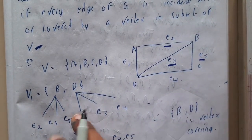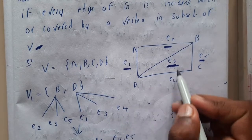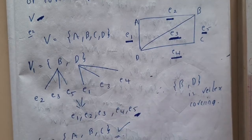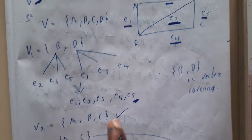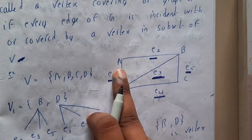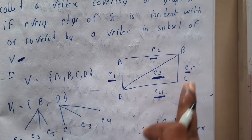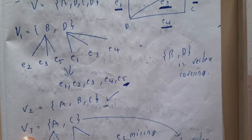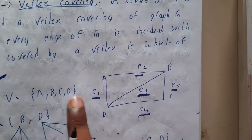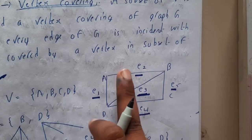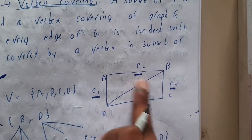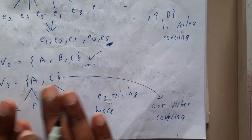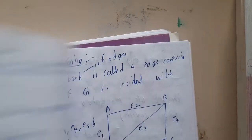In our example, v1 equals {b, d}. From b you can visit e2, e3, and e5; from d you can visit e1, e3, and e4 — their union gives all edges. Similarly, v2 equals {a, b, c}: from a you can visit two edges, from b all three, from c two — again all edges are covered. However, v3 equals {a, c}: from a you get two edges and from c two edges, but e3 is missing, so this is not a valid vertex covering set.